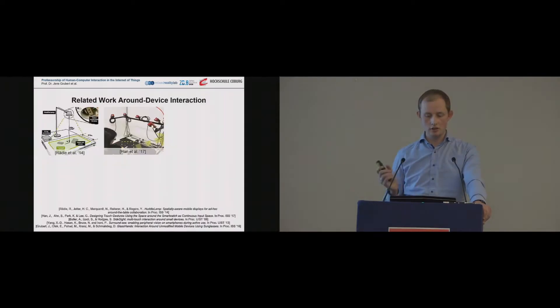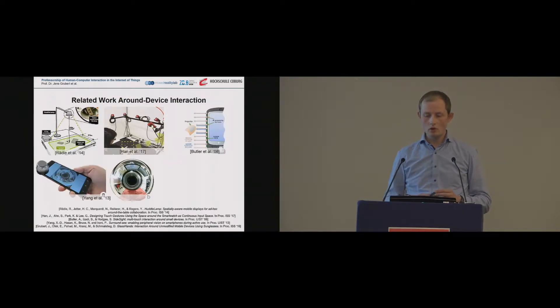So this is a common scheme and you see it all over the place. Here are some recent work from this year's ISS and from ISS 2014 where you actually see how to extend the input space using external cameras, early work by Butler et al. which equipped the mobile phone with additional sensors, or by Young et al. from WIST 2013 which used a 360 degrees lens on top of the mobile phone. Or our work from ISS last year where we basically ask users to wear sunglasses in order to extend the input space of mobile devices.